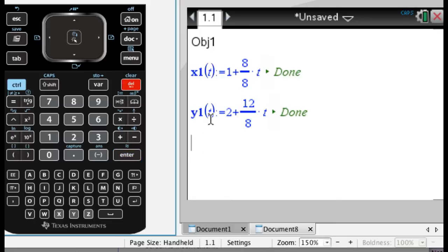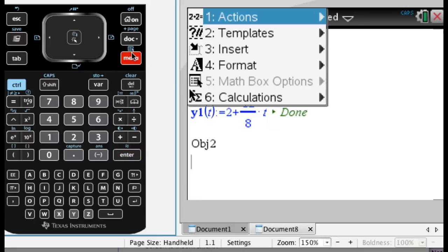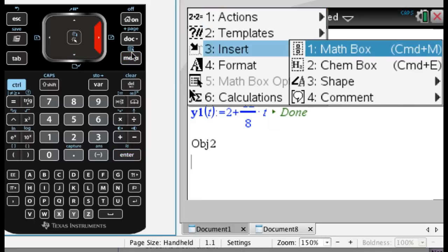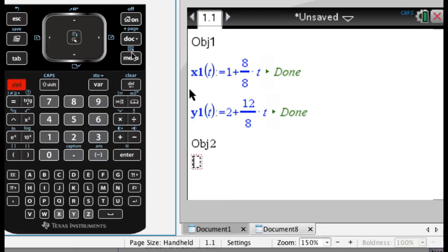Now I'm deleting that math box and I'm going to say object 2. If you look when you press menu and go to insert, it gives you a shortcut. For me it says command plus m. I'm pretty sure on the handheld it's control m. That can speed things up for you.